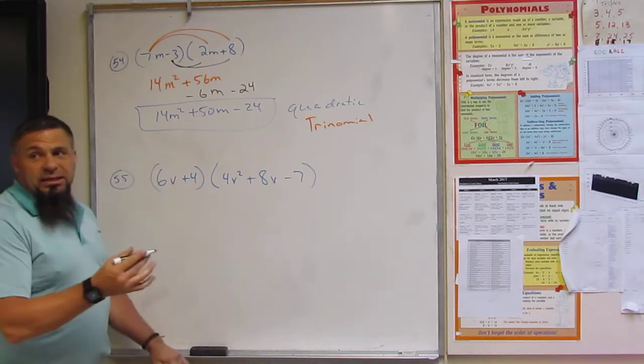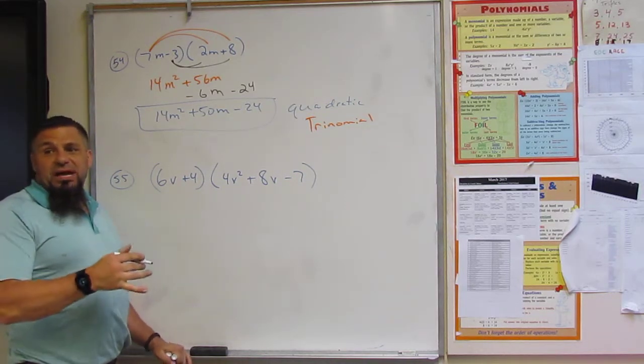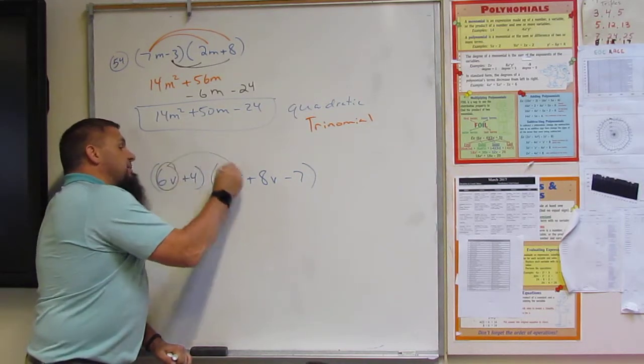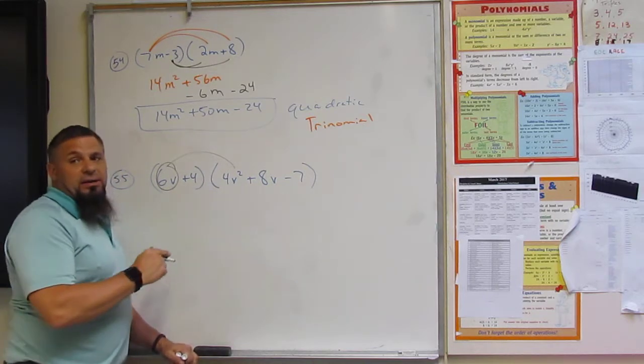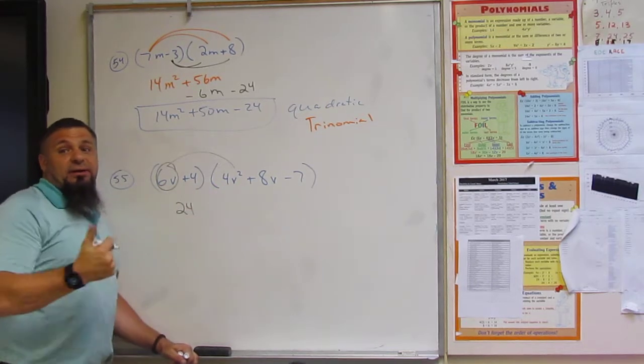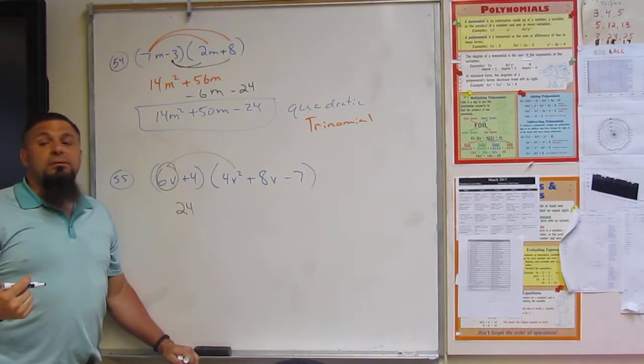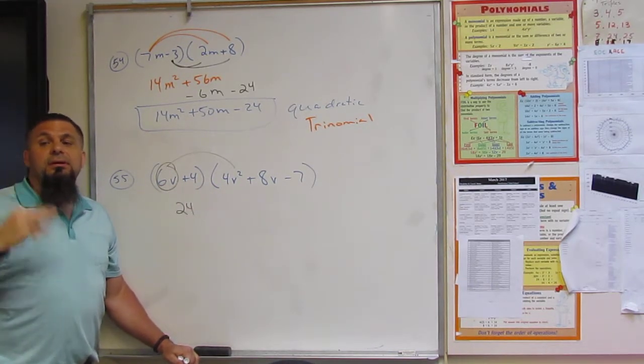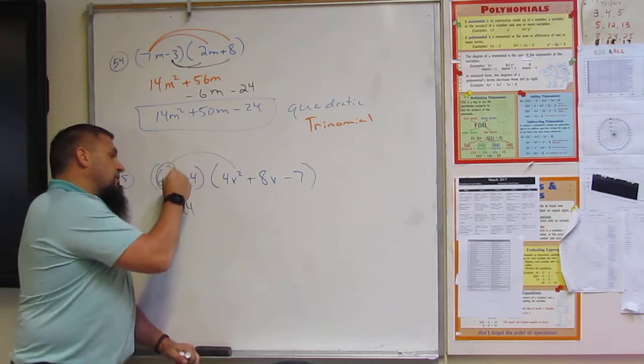All right. Now, same thing. This is a clamshell. So we got this times this. So 6 times 4. Isn't it 24? Yeah. And V times V squared. 1 plus 2. Think. There's a 1 here. There's a 2 here. I thought we were adding.